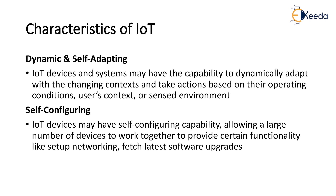Next characteristic is self-configuring — the most important characteristic. IoT devices may have a self-configuring capability allowing a large number of devices to work together to provide certain functionality, such as weather monitoring. These devices have the ability to configure themselves in association with the IoT infrastructure, set up networking, and fetch the latest software upgrades with minimal or no manual user intervention.